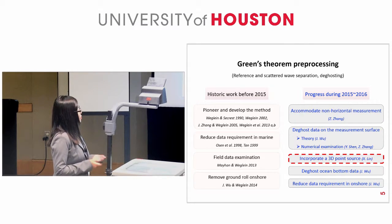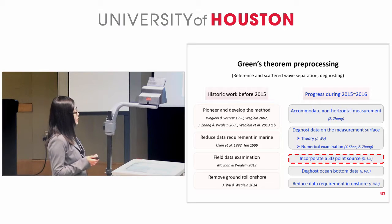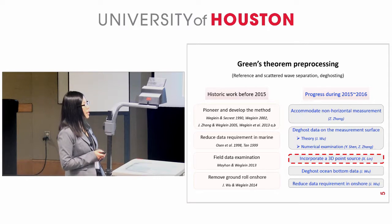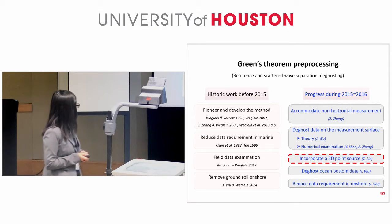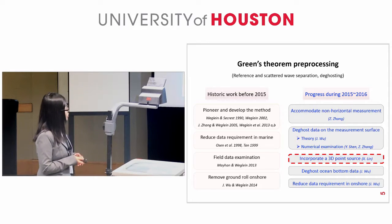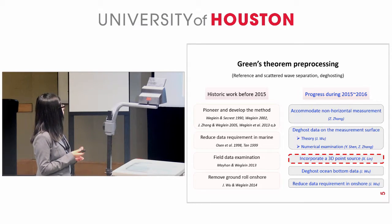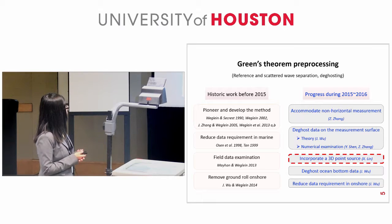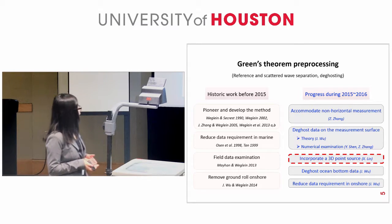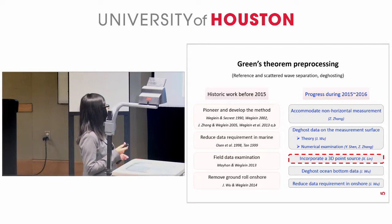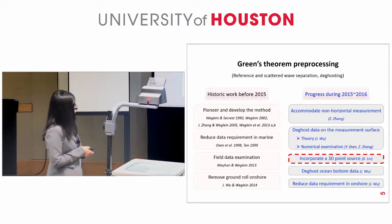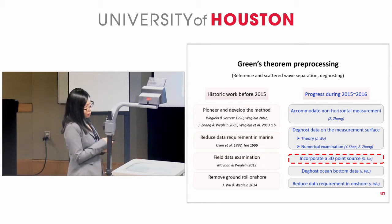Among all the deghosting methods, the Green's theorem-derived deghosting method, which is part of the Green's theorem preprocessing method, has a long history with continued high interest and in achieving greater capability. The left column shows the historic work done before 2015, which progressed the Green's theorem preprocessing method, and the right column shows the progress made by MOSRP this academic year. My topic focuses on incorporating a 3D point source to improve the effectiveness of the deghosting method.